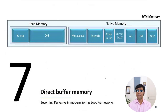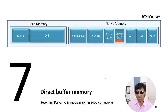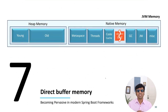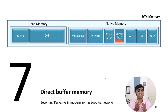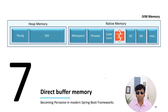In the JVM memory region there is a region called direct buffer, and when this region gets saturated and there is no more room to create additional objects in this region, that's when you are going to confront this java.lang.OutOfMemoryError direct buffer memory.